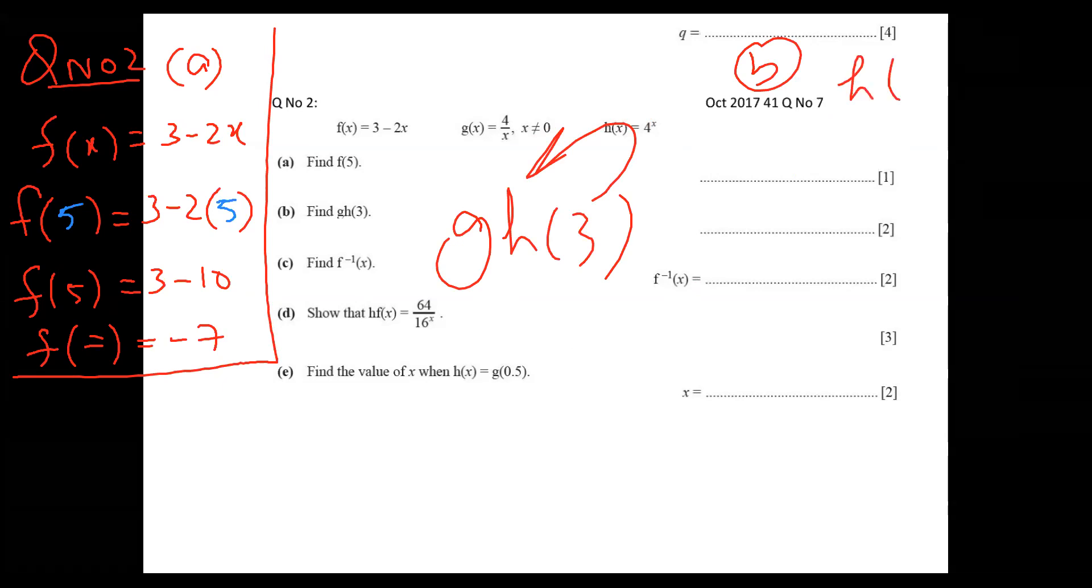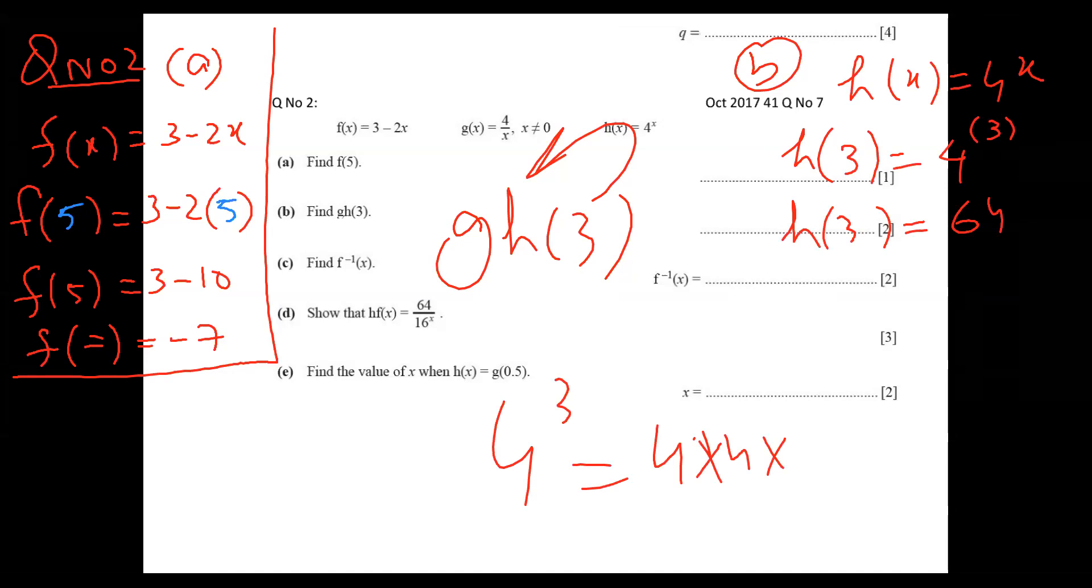H of X is very clear, four to power X. And I have to put three in the place empty spaces. So H of X empty space here and four to power empty space. So I will put three here and three here. So H of three equals 64. You got four to power three. What is four to power three? It means four into four into four, three times. Gives you 64.